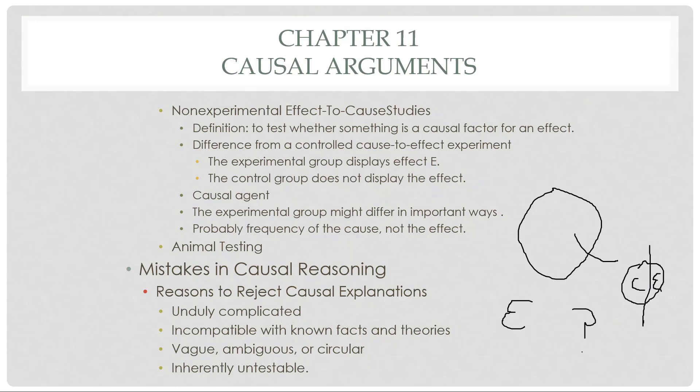Those are our three main ways of sorting out causation in populations. Next we'll move on to mistakes in causal reasoning. We'll get into the fallacies in the next video, but briefly, here are some reasons to reject a causal explanation — be it small-scale causal cases or these large-scale population cases. One would be that the explanation is unduly complicated.